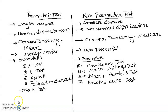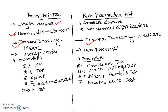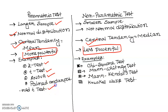The difference between parametric and non-parametric tests: parametric tests require a larger sample size, assume normal distribution, and use the mean as the measure of central tendency. Non-parametric tests apply when data is not normally distributed and use the median as central tendency. Parametric tests are more powerful; non-parametric tests are less powerful. Examples of parametric tests: Z-test, T-test, ANOVA, paired and unpaired T-test. Examples of non-parametric tests: Chi-square test, Mann-Whitney U test, Kruskal-Wallis test.